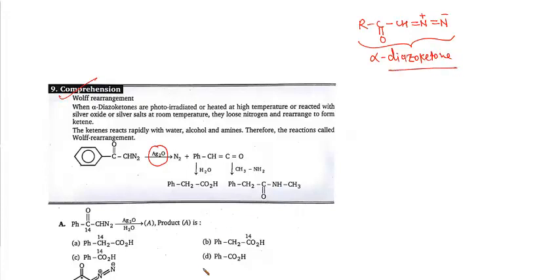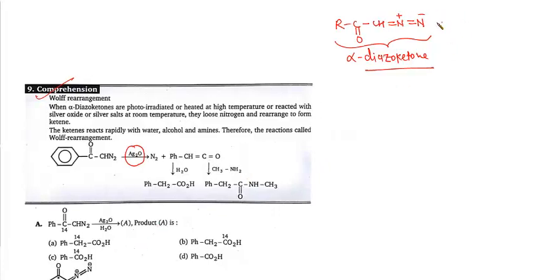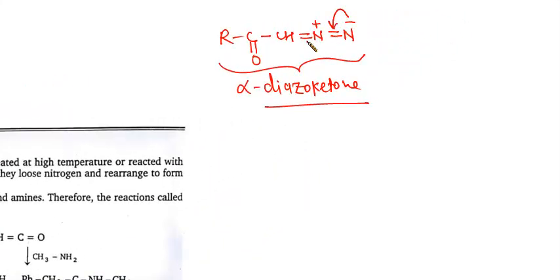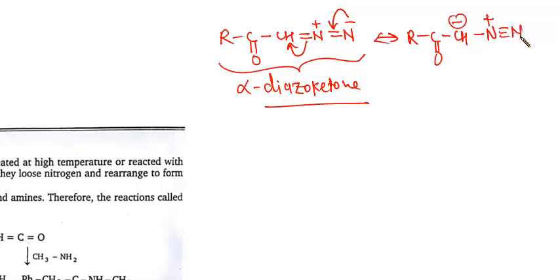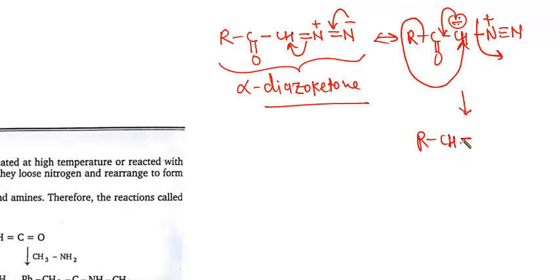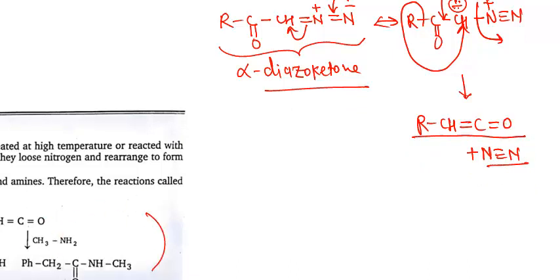If you understand the mechanism well, all questions will be solved. The alpha diazoketone undergoes resonance: this bond goes here, that bond goes there — in resonance, R-CO-CH gets a minus charge, N gets a positive triple bond N. Then rearrangement occurs: this bond goes here, R migrates onto this carbon, N₂ leaves — generating ketene: R-CH=C=O, plus N₂ leaves. This is ketone + C, and this reaction is based on that.